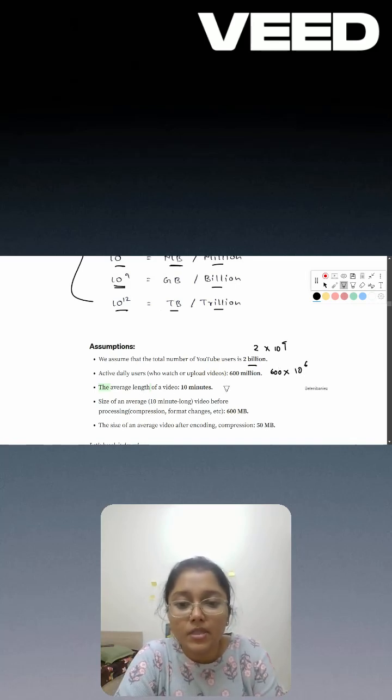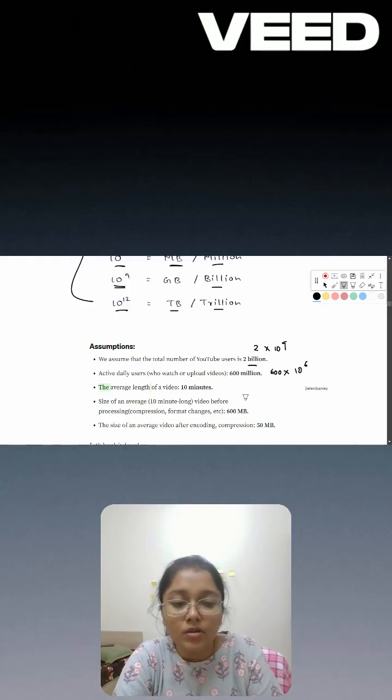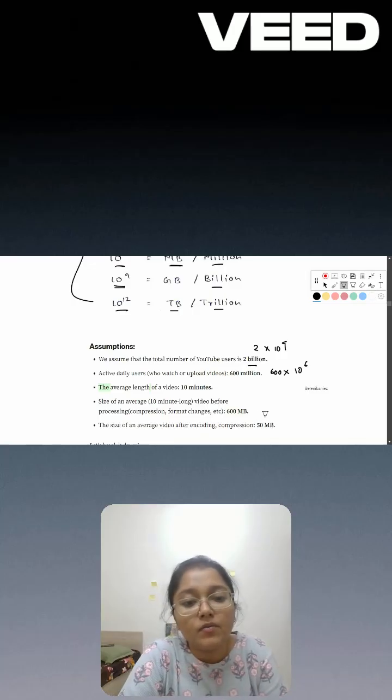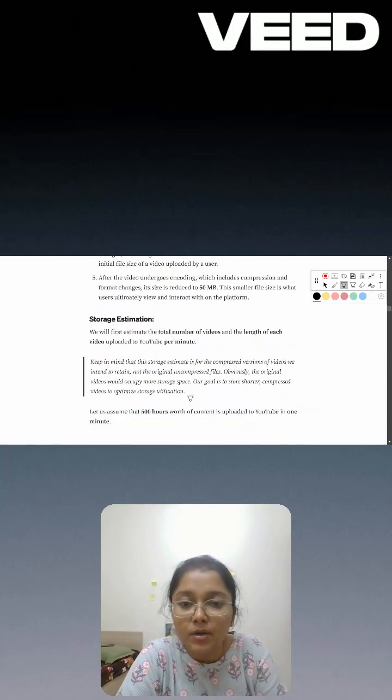Average length of a video is 10 minutes. Size of the video before compression is 600 MB, and when we are doing encoding and compression, the size is 50 MB. So our problem statement is: we want to calculate how much storage is required.